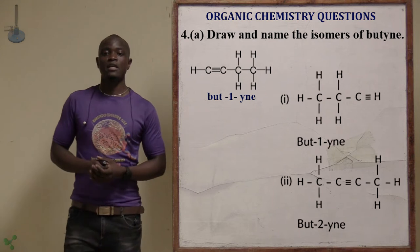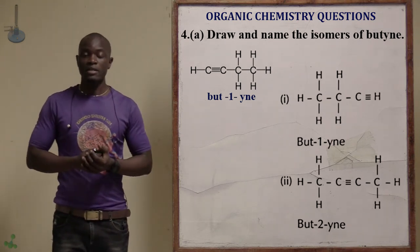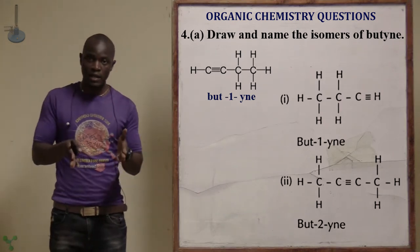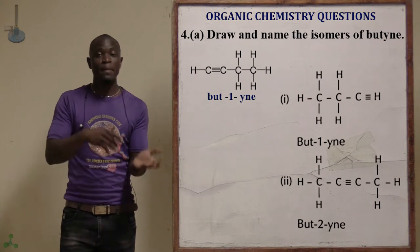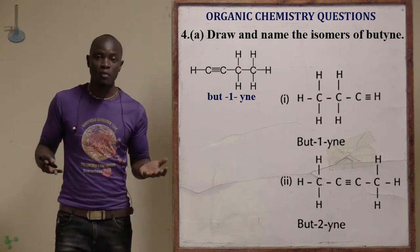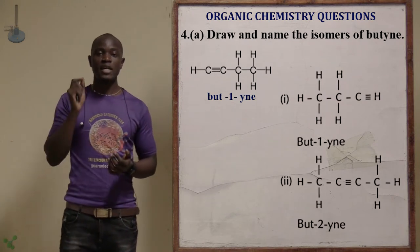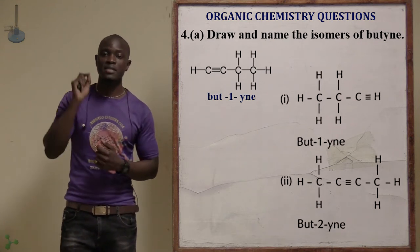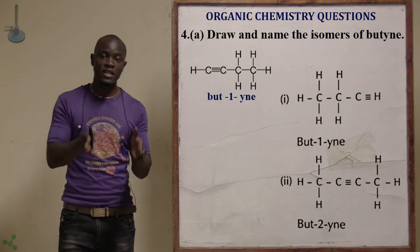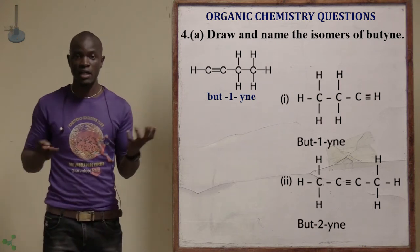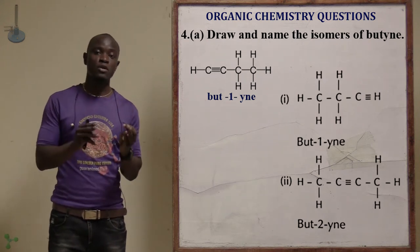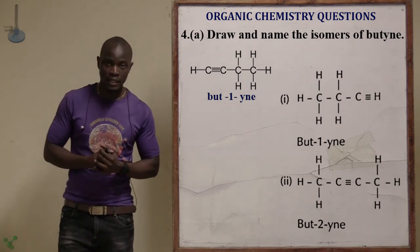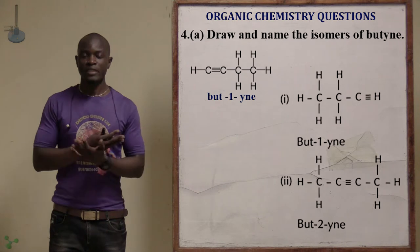The next question asks to draw and name the isomers of butyne. An isomer consists of substances having the same molecular formula but different structural formula. For butyne, you manipulate where you place the hydrogens and carbons. They must have the same molecular formula but different structure — you just change the structure and that is an isomer.